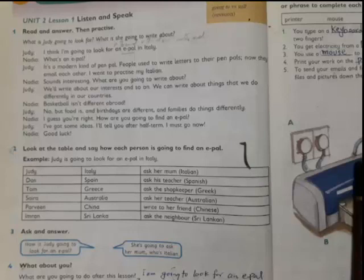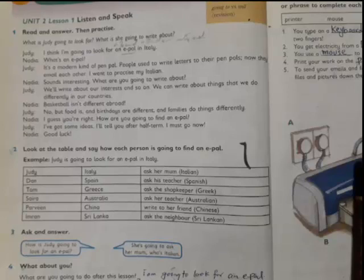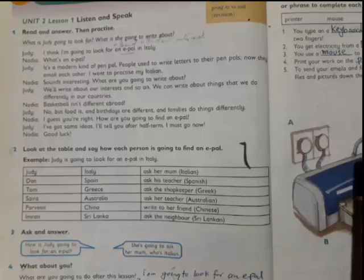Nadia says basketball isn't different abroad. Judy says no, but food is, and birthdays are different, and families do different things. Nadia says I guess you're right. How are you going to find an e-pal? Judy says I have got some ideas, I will tell you after half time. I must go now.